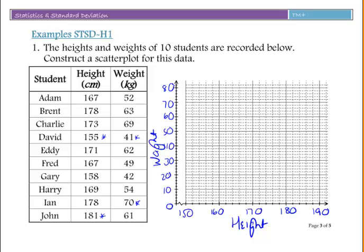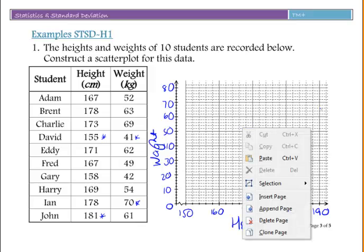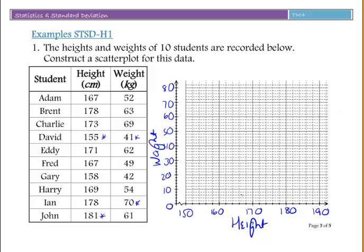Now let's plot. The first point is 167 and 52. On my x-scale, that's 162, 164, 166, 168, 170, so 167 must be in here. I want to go up to 52, which is just above 50. So 167, 52 will be about there. Put a dot or a cross, whatever works for you.